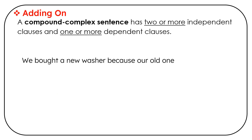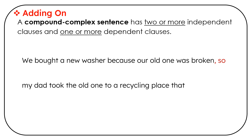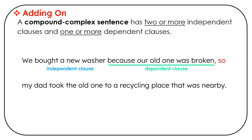We bought a new washer because our old one was broken, so my dad took the old one to the recycling place that was nearby. We bought a new washer is an independent clause. Because our old one was broken is a dependent clause — it starts with because.